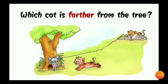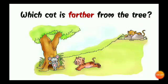Then, which cat is further from the tree? See, here we can see a rat and two cats. Which cat is further from the tree? Okay. Let's do next one. See, here we can see two beautiful kites. Which kite is further from the tree? First kite. Okay. The next one.